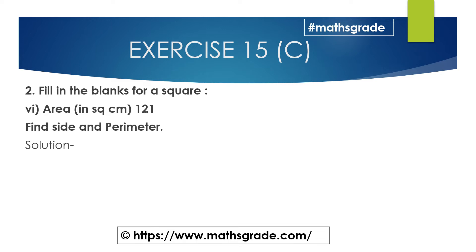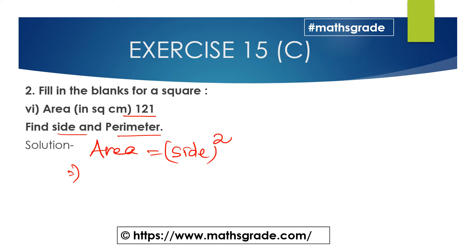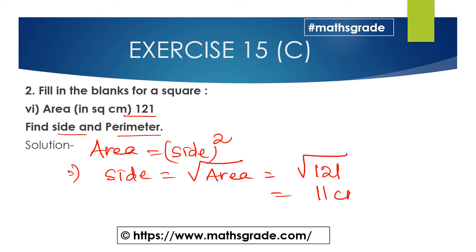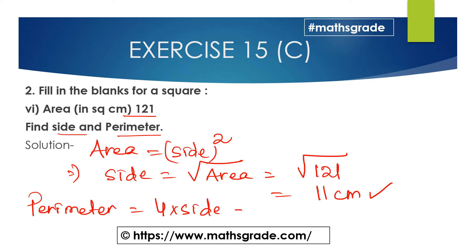Now question number six. The area of the square is given as 121 square centimeters. Find the side and perimeter of the square. Area = side², so side = √121 = 11 centimeters. The perimeter of the square is 4 × 11 = 44 centimeters. So the side is 11 centimeters and the perimeter is 44 centimeters.